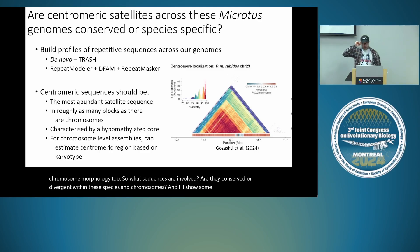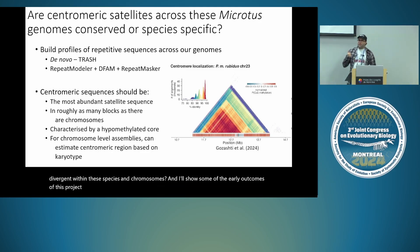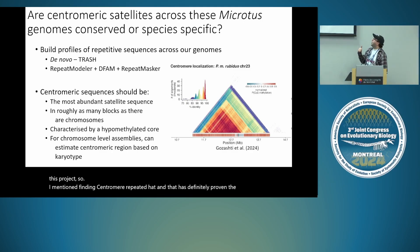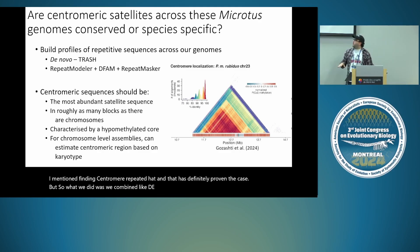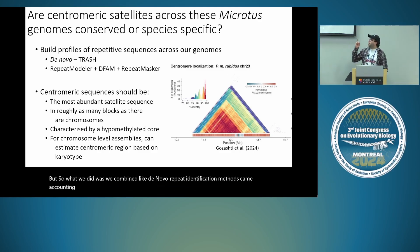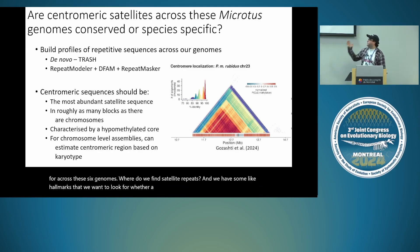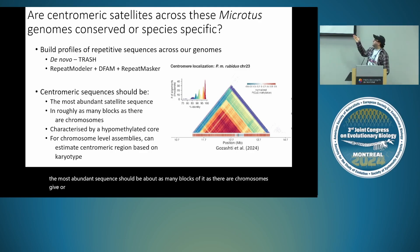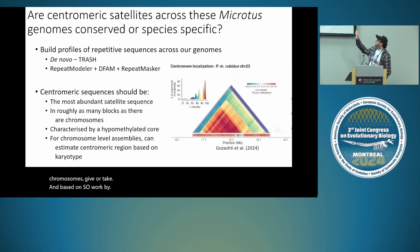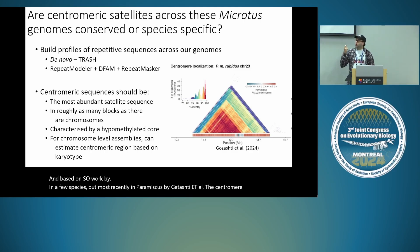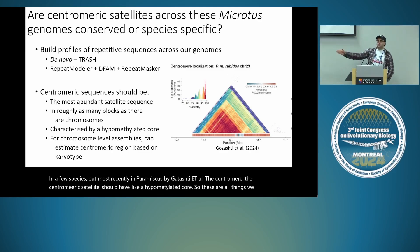Finding centromere repeats is hard, and that has proven to be the case. What we did was combine de novo repeat identification methods and k-mer counting methods like Trash, as well as existing repeat models, to find satellite repeats across six genomes. The hallmarks we look for are: the most abundant sequence, with about as many blocks as there are chromosomes, and based on work in Peromyscus by Getchell et al., the centromeric satellite should have a hypomethylated core.